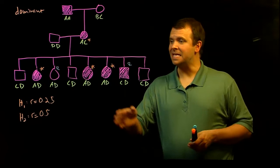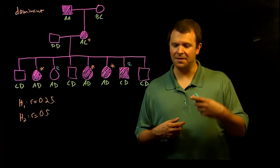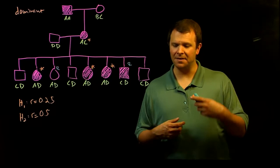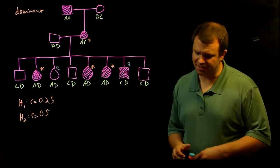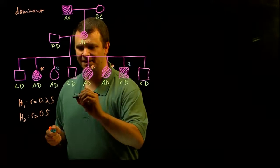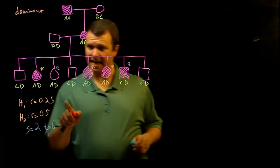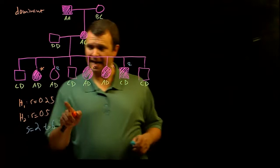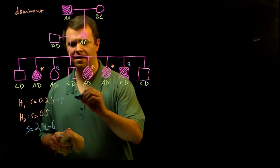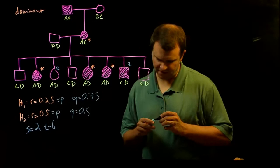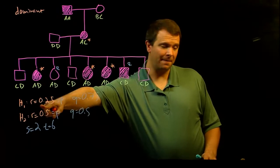And so now we can ask, given each of these hypotheses, what is the probability that we actually saw two recombinants and six non-recombinants? And so recall that this kind of either or question is an excellent candidate for the use of the binomial distribution. And so in this case, testing both of these hypotheses, S is two and T equals six. And so under hypothesis one, P is 0.25 and Q is 0.75. And under hypothesis two, P is 0.5 and Q is also 0.5.